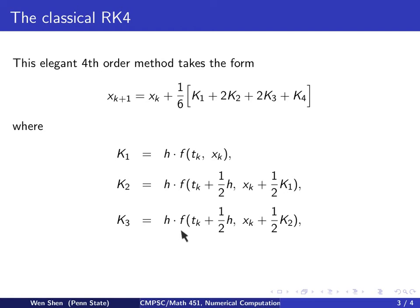We see that this part of k3 is a good approximation to x prime at tk plus h half. And finally, k4 is computed as h times f at tk plus h, xk plus k3, the most recent k. So this part in k4 is actually an approximation to x prime at tk plus h. The method has very nice coefficients and is very elegant.